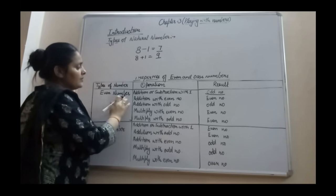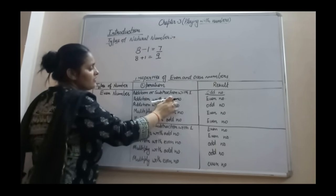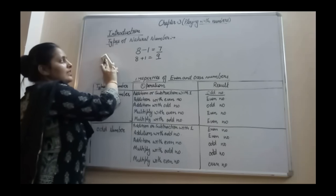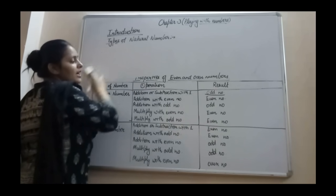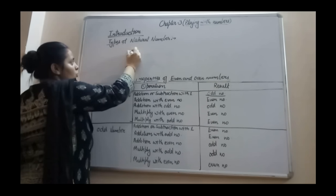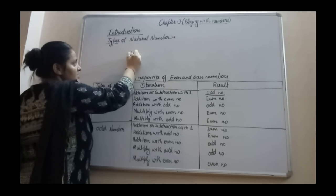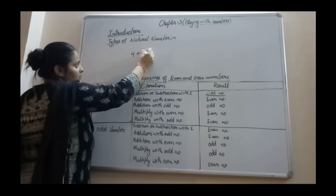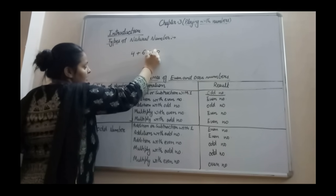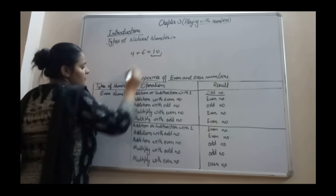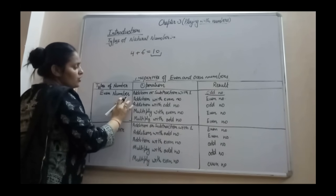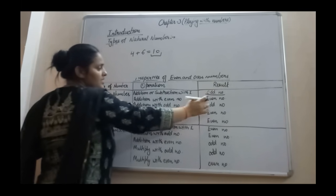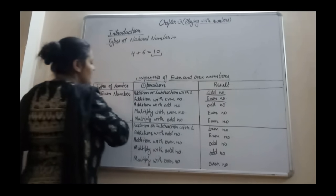Second property: even number plus even number. When you add two even numbers, your answer is always an even number. For example, 4 is even and 6 is even. When you add them you get 10, which is also an even number.